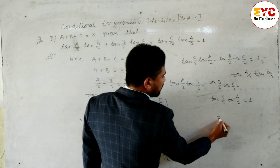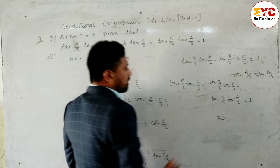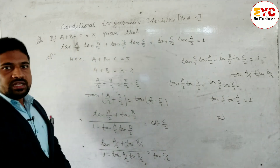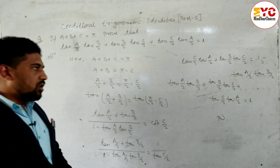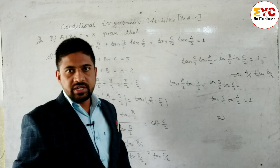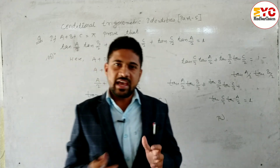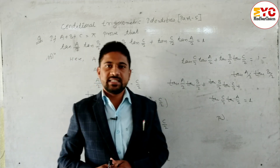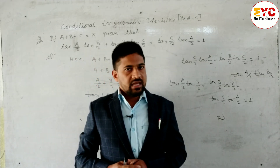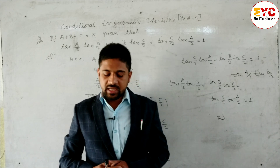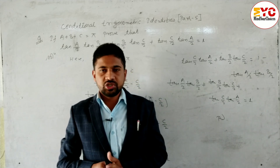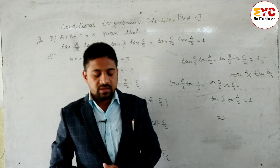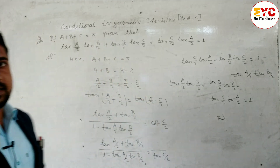Proved! So to summarize: when the expression is in the form of tan and cot, no need to take LHS or RHS — just take the condition, and then take tan both sides if it's a tan expression, or cot both sides if it's a cot expression. Hope you understand this question. Next question is related to cot — keep watching till the end.